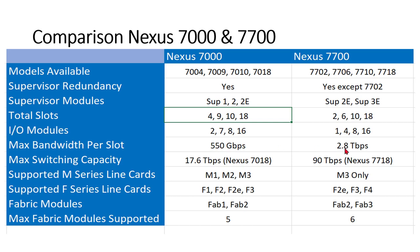Maximum switching capacity is the total for the chassis. For the 7010, with eight I/O modules and two supervisors, the total switching capacity is 17.6 Tbps. For the 7718 it is approximately 90 Tbps — almost a 4.5-times jump. Input/output modules are of two types: M series and F series.